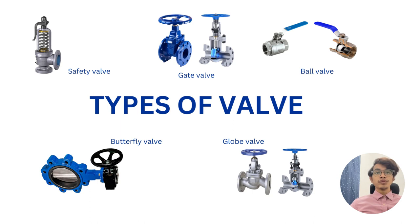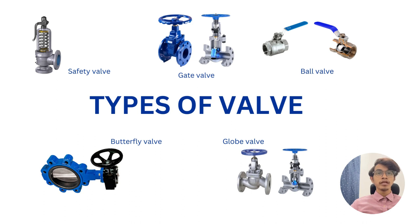We now move to the types of valve, and I will explain them one by one, starting with the safety valve. A safety valve is basically a valve that acts as a fail-safe system. An example is a pressure relief valve, which automatically releases a substance from a boiler, pressure vessel, or piping system when the pressure or temperature exceeds the preset limits.